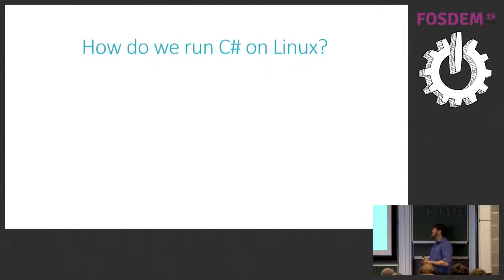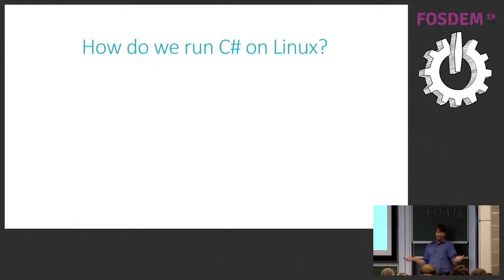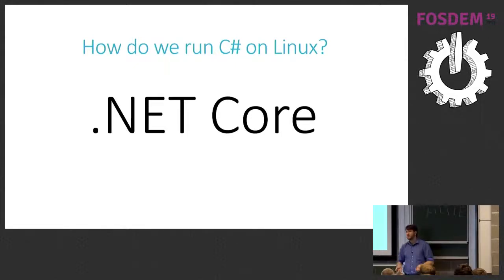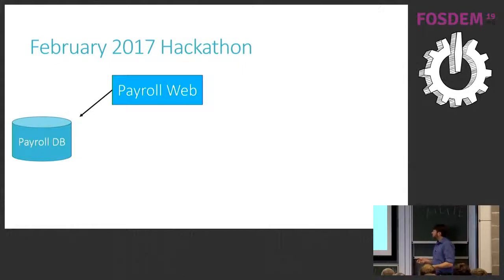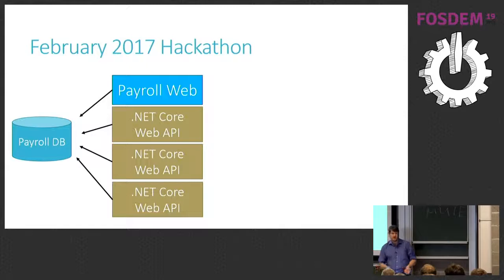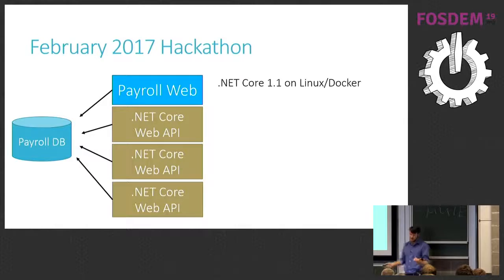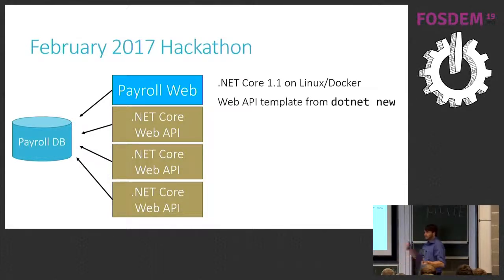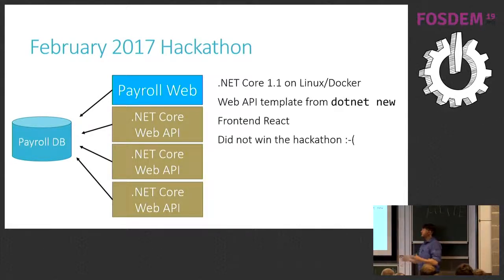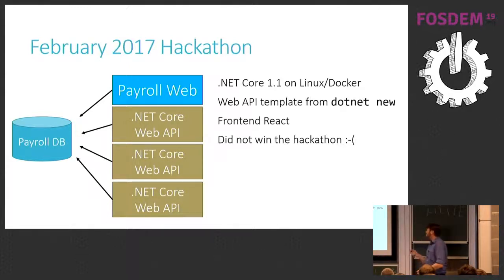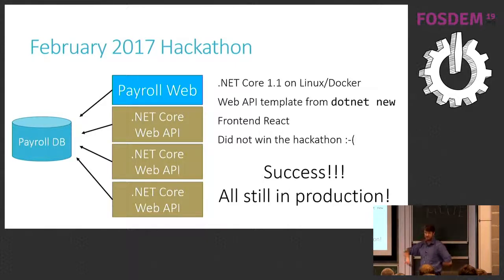So how do we write C# on Linux? We had the choice of Mono, but we were old-school Microsoft developers — if it didn't come from Microsoft, we were scared of it. So we decided to go with .NET Core, which was at 1.0 at that time. In February 2017, we had a hackathon at work and created three brand new .NET Core Web API projects — services running on .NET Core 1.1 on Linux in Docker. They used the .NET new templates with a React front end and Web API back end talking to SQL Server. None of them won the hackathon, but all three are still in production today.